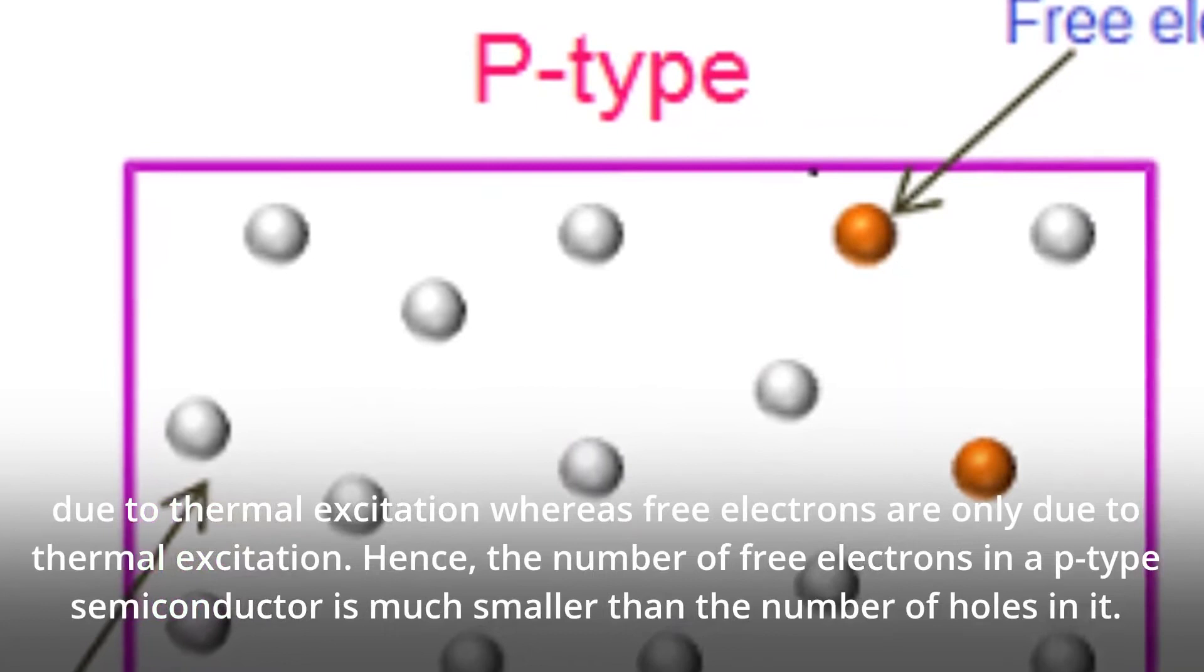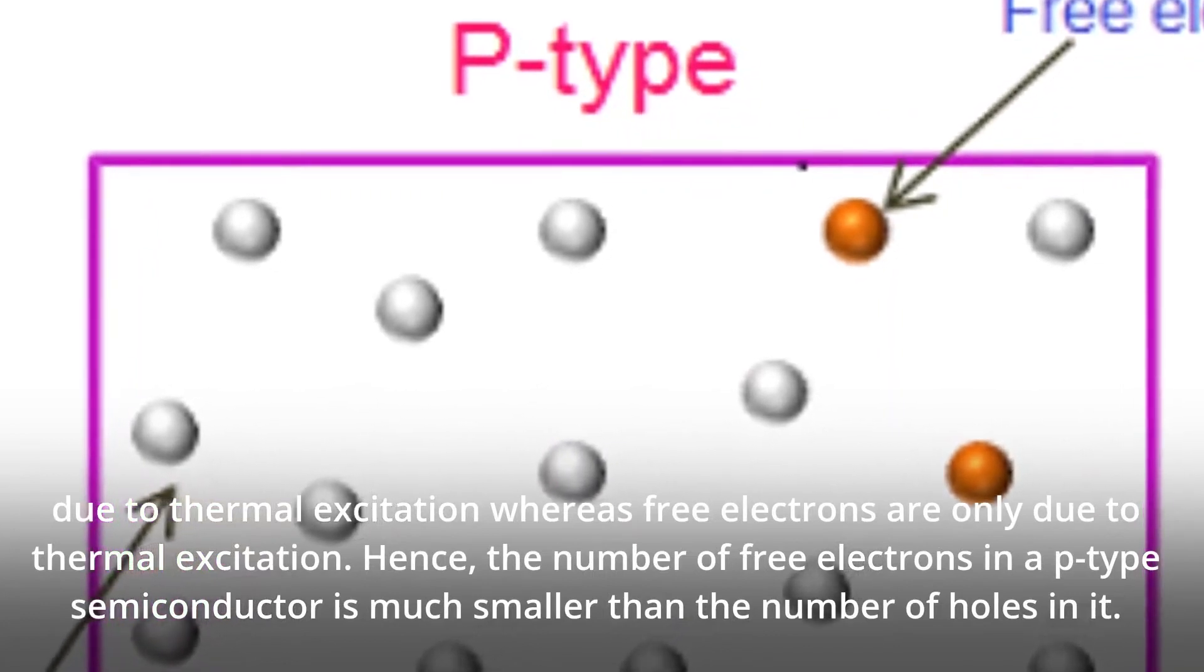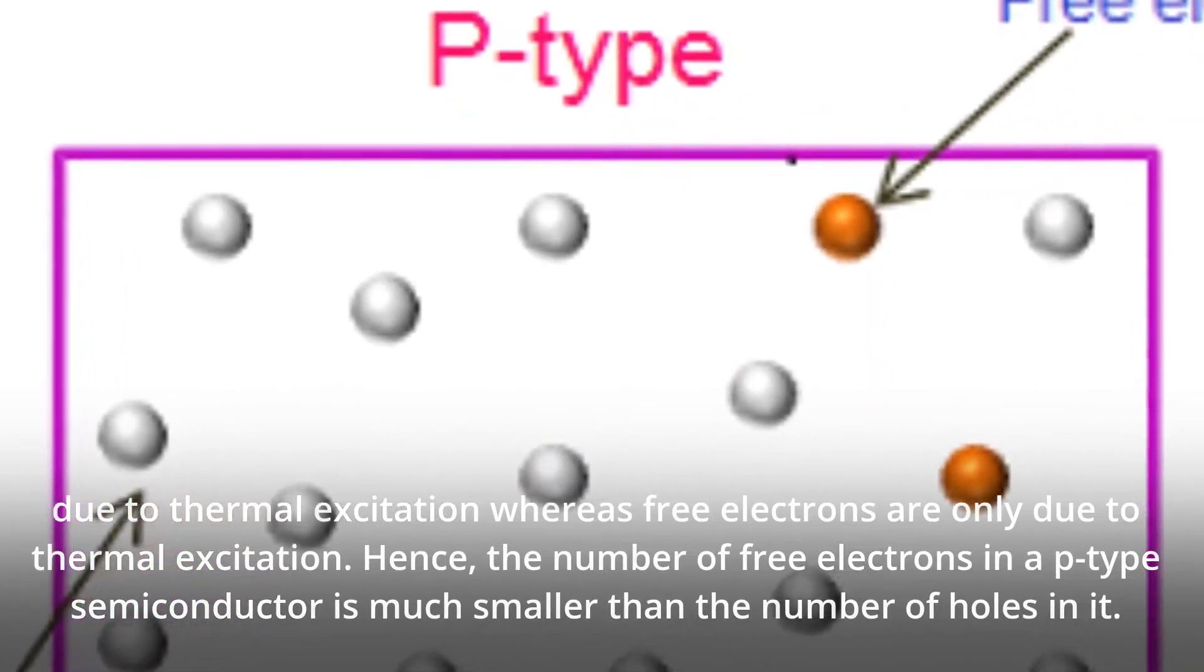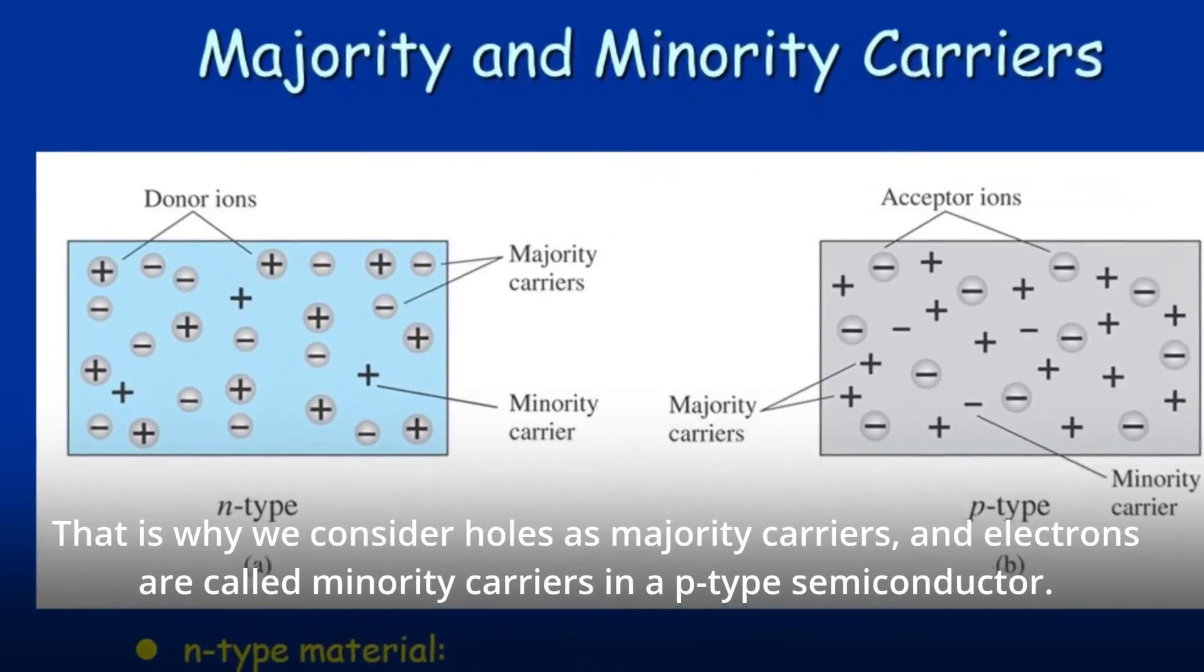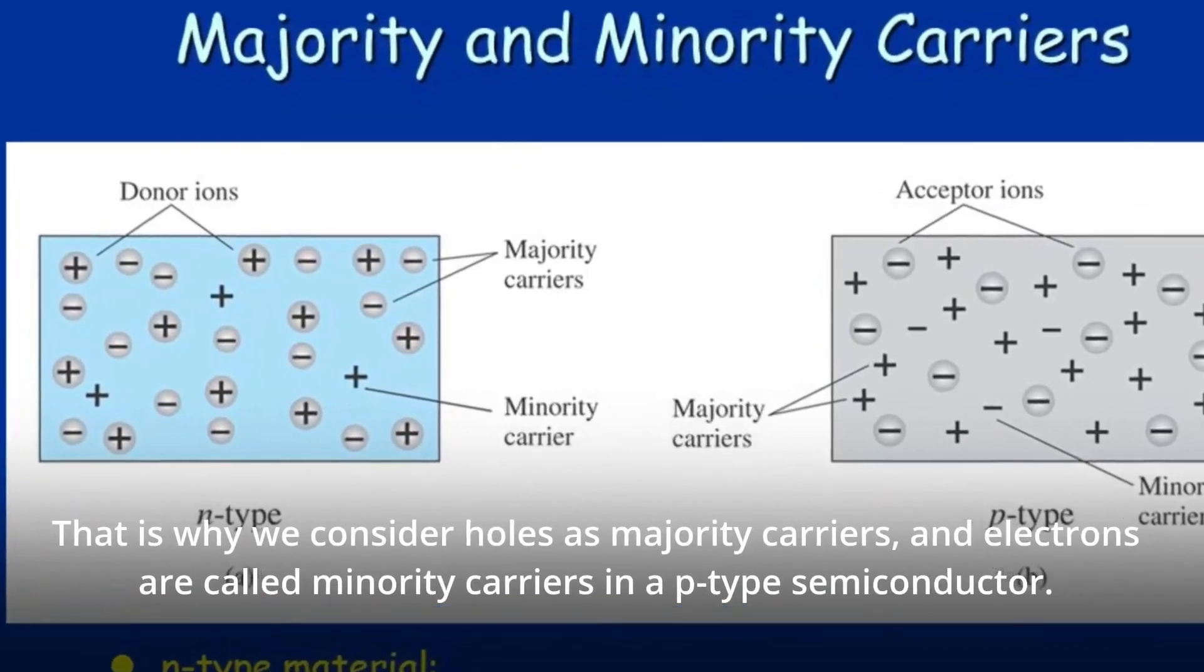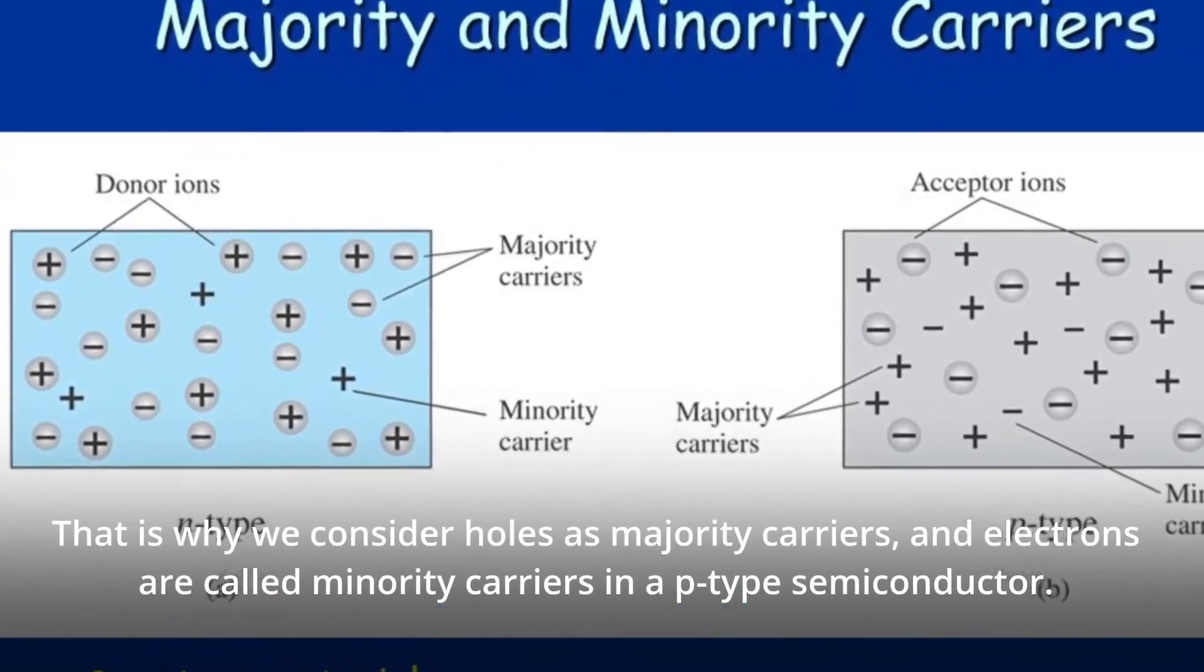Hence, the number of free electrons in a p-type semiconductor is much smaller than the number of holes in it. That is why we consider holes as majority carriers, and electrons are called minority carriers in a p-type semiconductor.